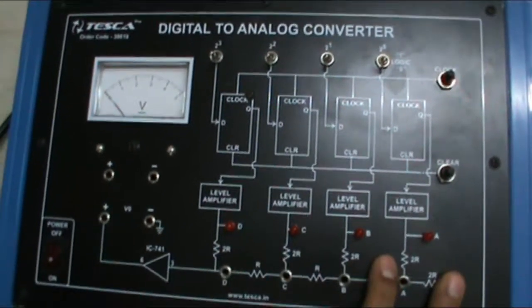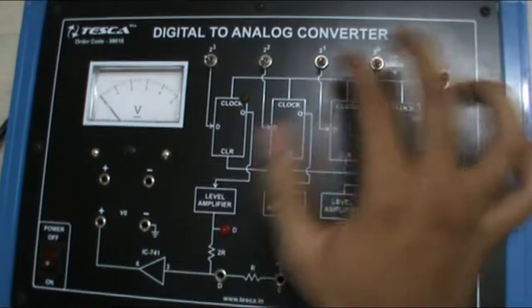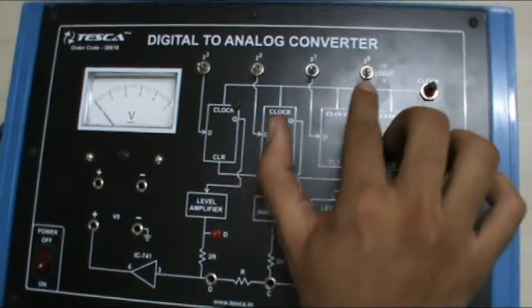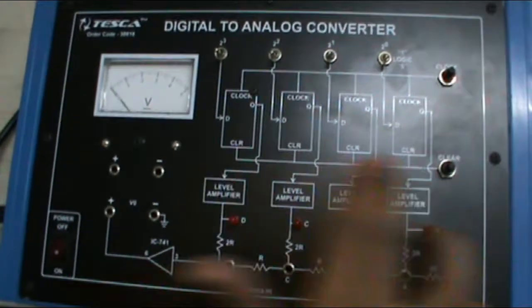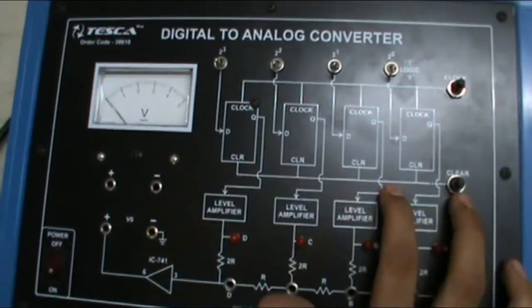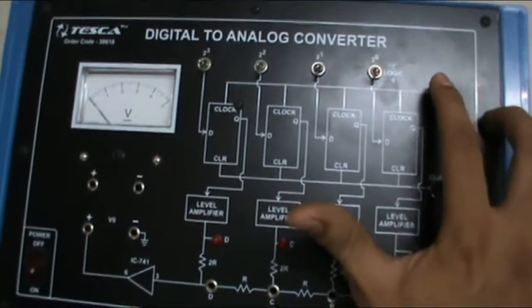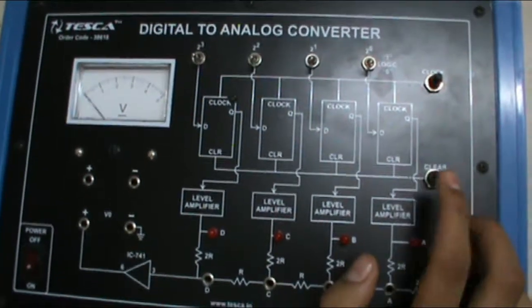These are the four LEDs. This is the digital input in binary that we give. This is logic 0 and this is logic 1. These are the four D flip-flops to store the buffer values. This is the clock pulse and this switch is for clear.